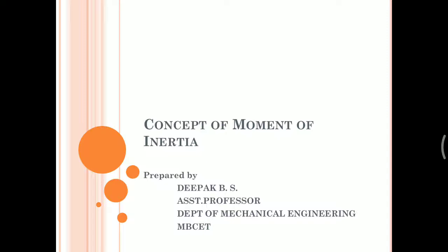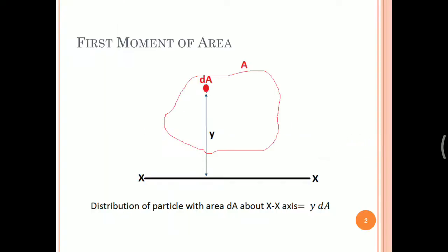In the previous session we have seen the concept of first moment of area and how the position or location of centroid is derived from the first moment of area. Let's have a quick review of our previous session before proceeding to today's session. The first moment of area represents how a particle is distributed within an area, and it is called so because it is obtained by taking the moment of an area — that is, you multiply your area with a distance from the axis. That is why it is called the first moment of area.